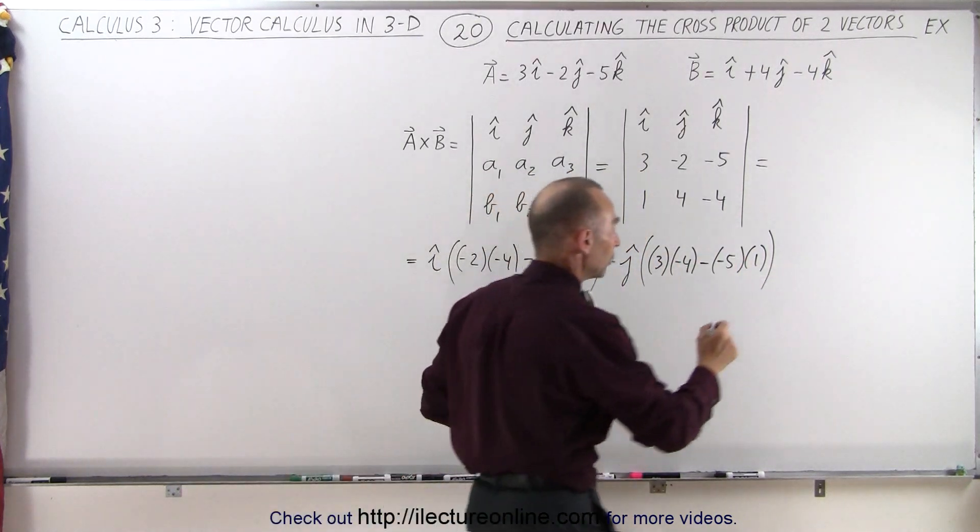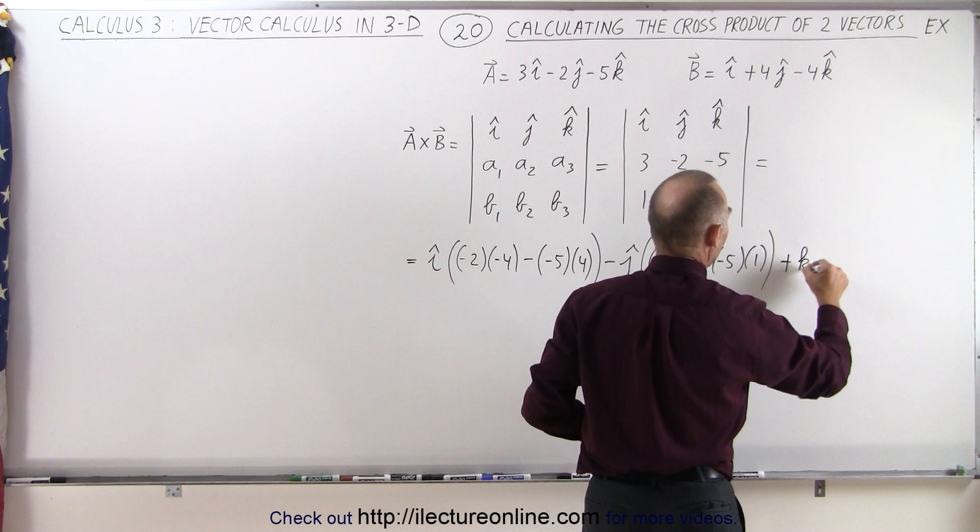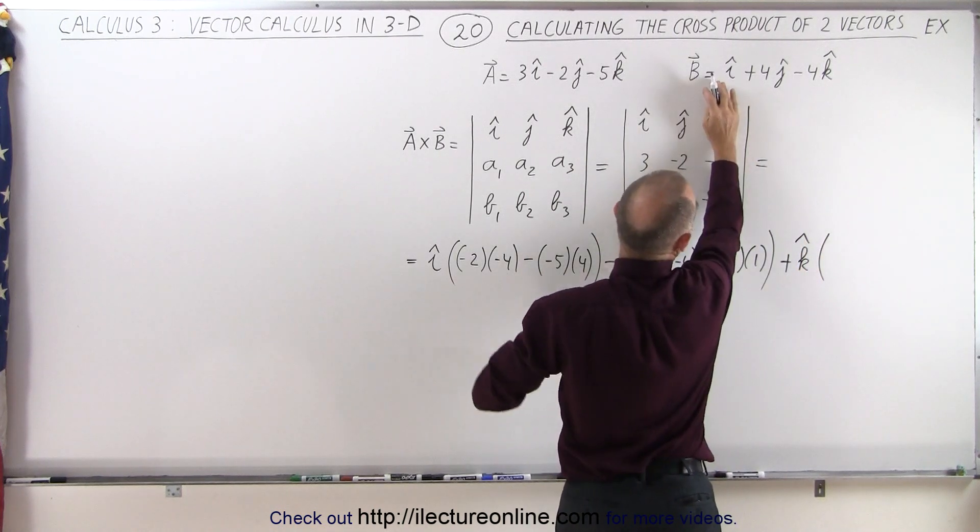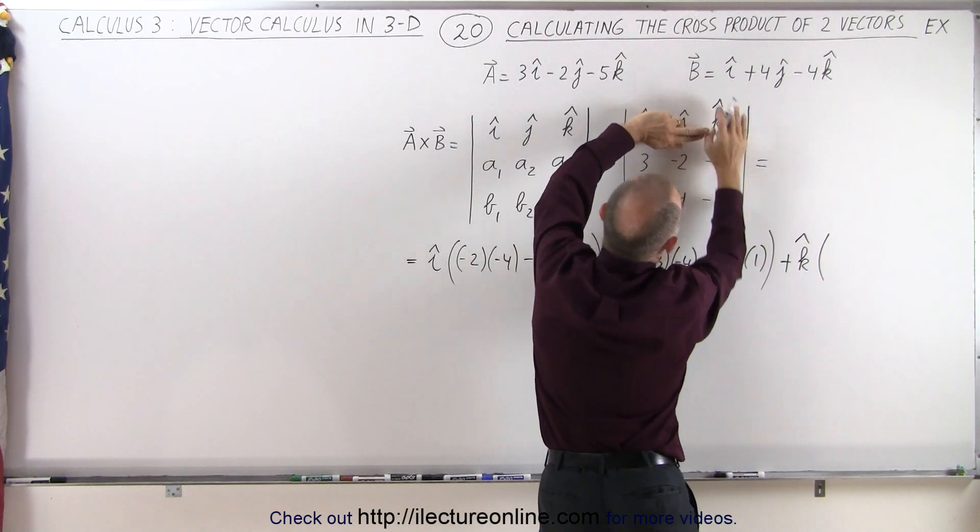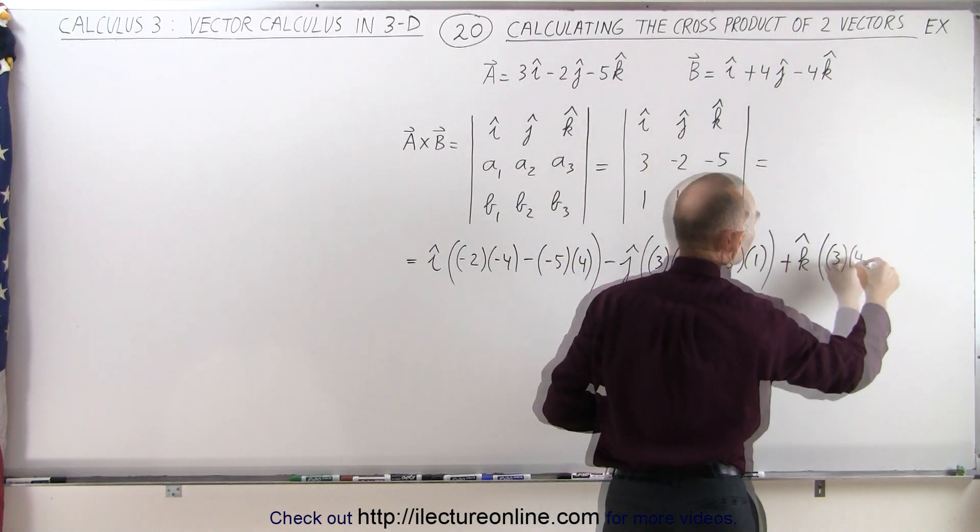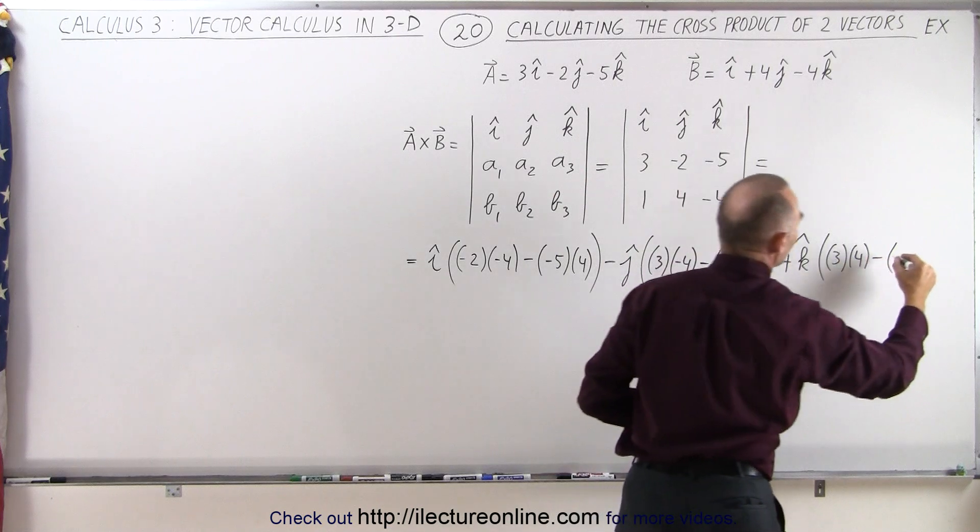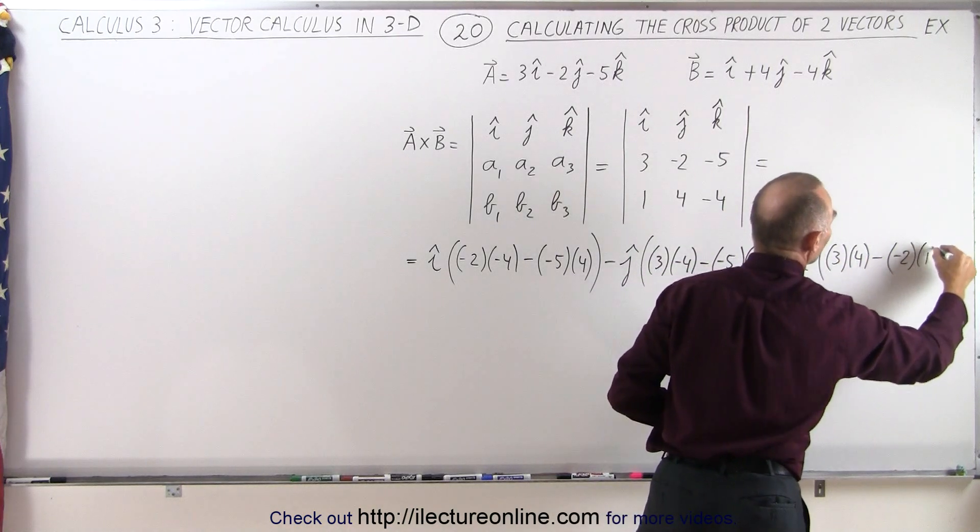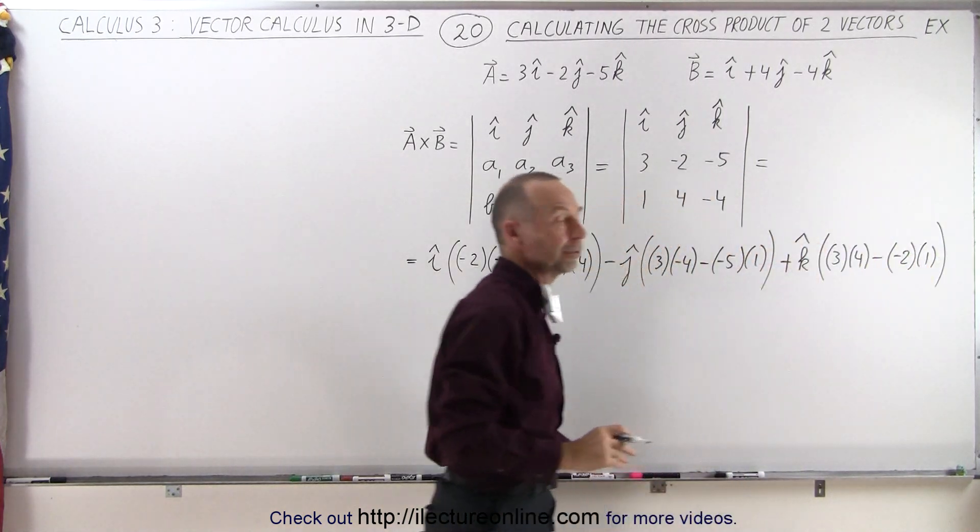Now for the third component you get plus K times. So get rid of this column and this row. That leaves you these four elements. So it's 3 times 4 minus when you multiply these two together which is a minus 2 times a 1. And there's your third component.